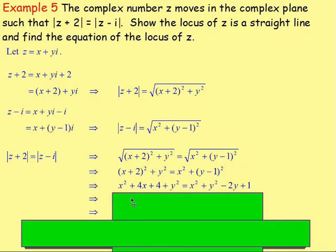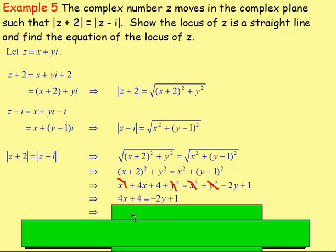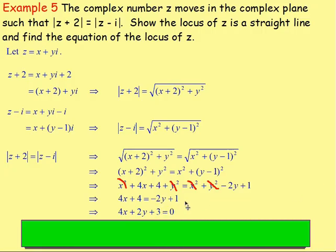Expanding both sides: x² + 4x + 4 + y² on the left, and x² + y² − 2y + 1 on the right. The x² terms cancel, the y² terms cancel, leaving 4x + 4 = −2y + 1. Rearranging — add 2y to both sides, subtract 1 from both sides — gives 4x + 2y + 3 = 0.